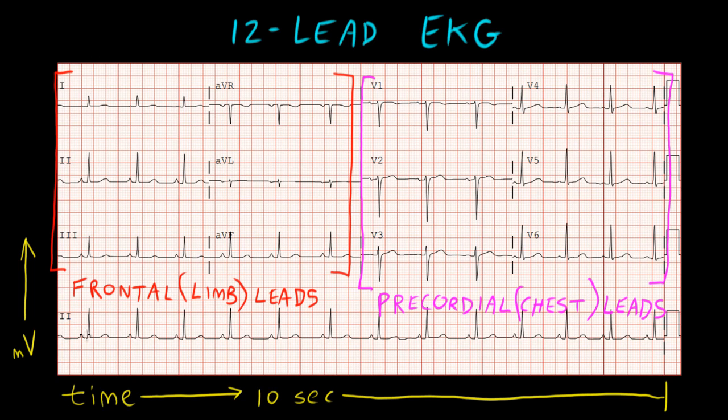And down here, we have our rhythm strip. On most EKGs, lead 2 is used as a rhythm strip, though you'll see a number of tracings that use other leads, such as V1. The rhythm strip can be used to help determine the heart rhythm. In this case, we can see lead 2 over the entire 10 seconds of the tracing, as opposed to the small snapshot we get to see up here.